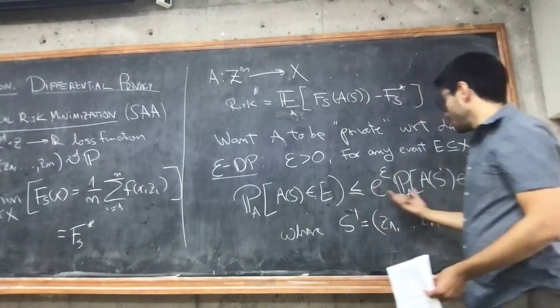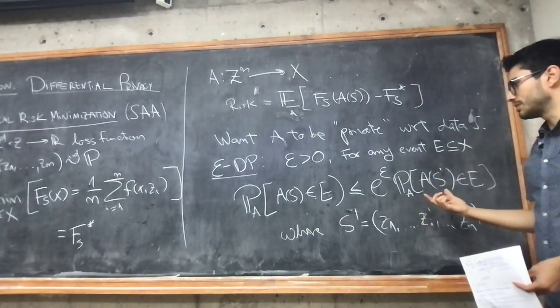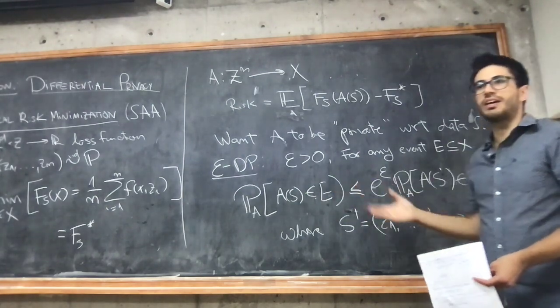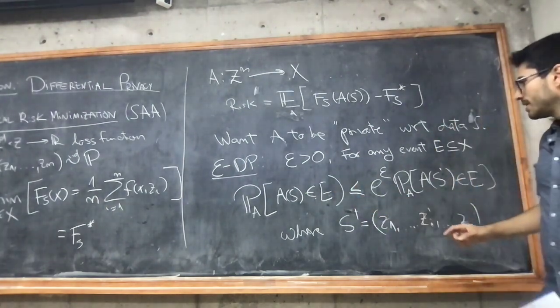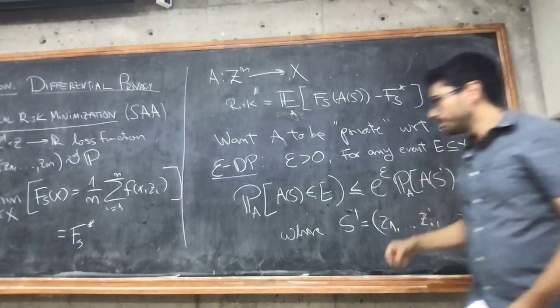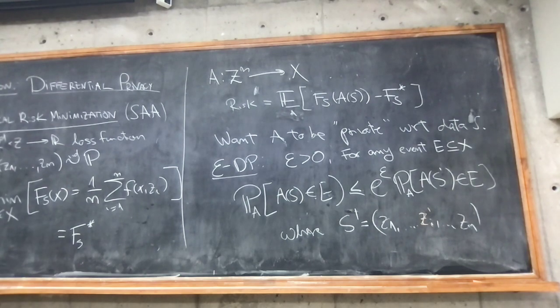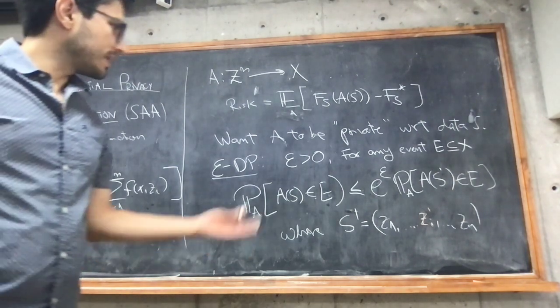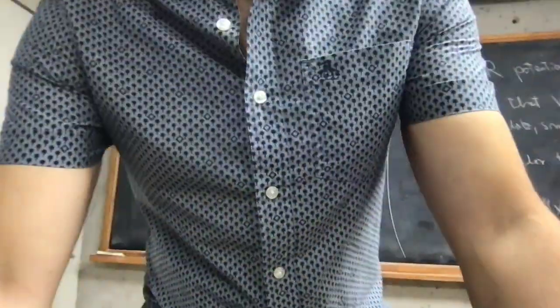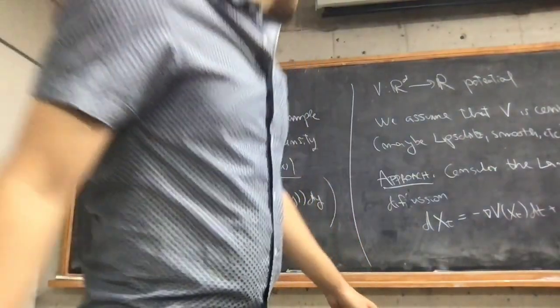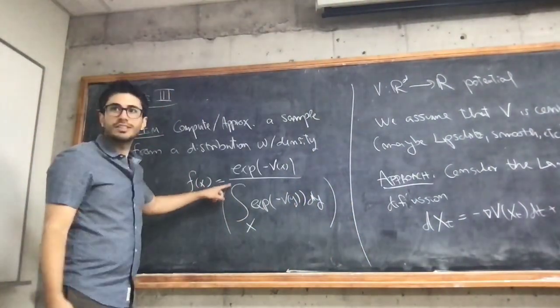I'm not going to discuss how this induces privacy in detail, but it is somewhat natural: if replacing an individual leads to outcomes that are very similar in both cases, it's quantifying that these outcomes are nearly indistinguishable — up to this e to the epsilon term. You can also translate this in terms of the log-likelihood function of A being upper bounded by something like that. What I want to show is that you can satisfy this using something like this density.